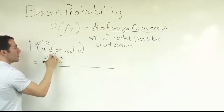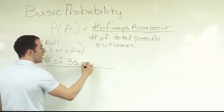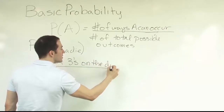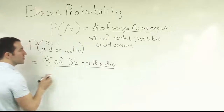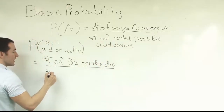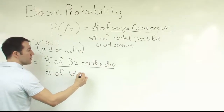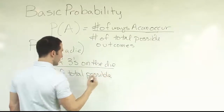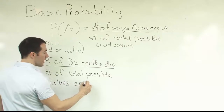So we look at this and say, what are we dealing with? Threes. So the numerator is the number of threes on the die. And once you have that, the next thing is to look at the denominator of the fraction, which is the number of total possible outcomes — the number of total possible values on the die.